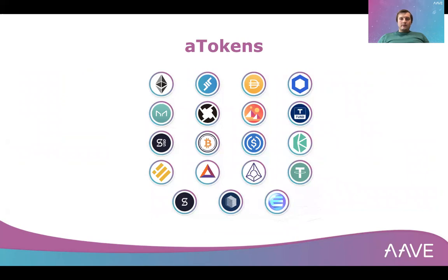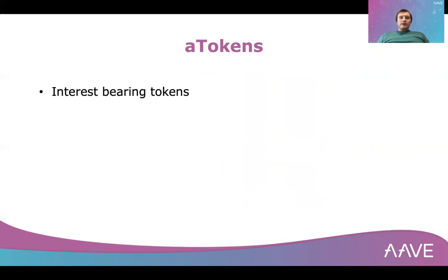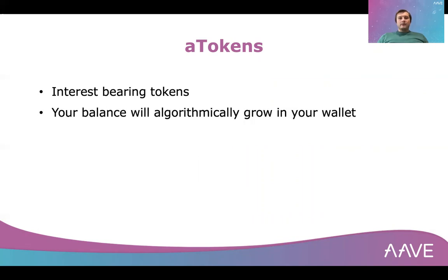I mentioned aTokens at the beginning of the talk. aTokens are interest-bearing tokens — when you deposit a currency into Aave, you get a receipt in return, and this receipt represents your deposit. You can use it to claim your deposit at a later time. If you deposit DAI, you get aDAI; if you deposit USDC, you get aUSDC. That's where the name aToken comes from. The interesting part is that when you are holding the aToken — whether in your cold wallet, your MetaMask, or elsewhere — that token balance will increase algorithmically.